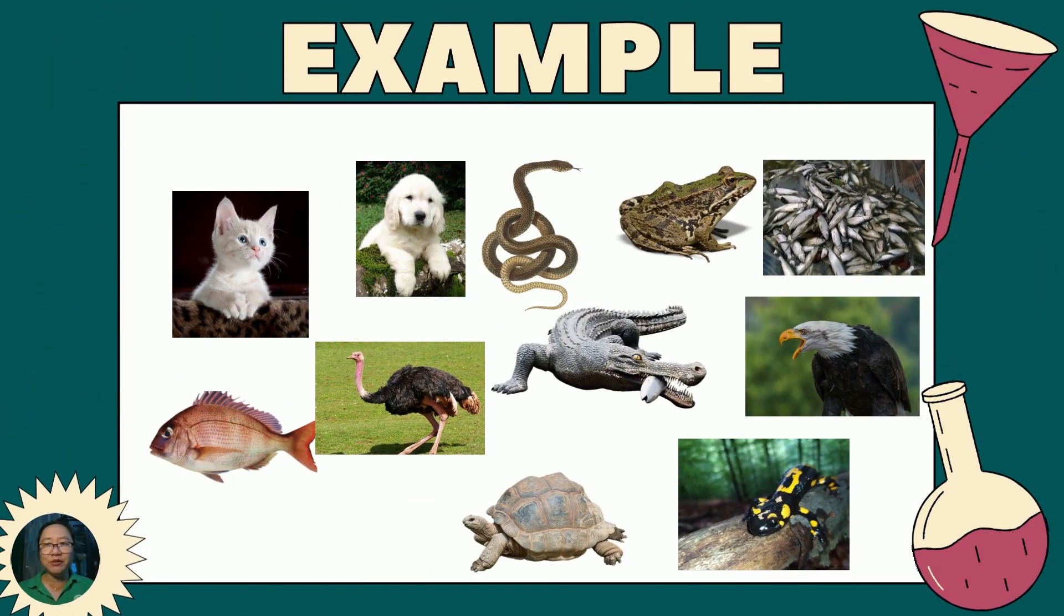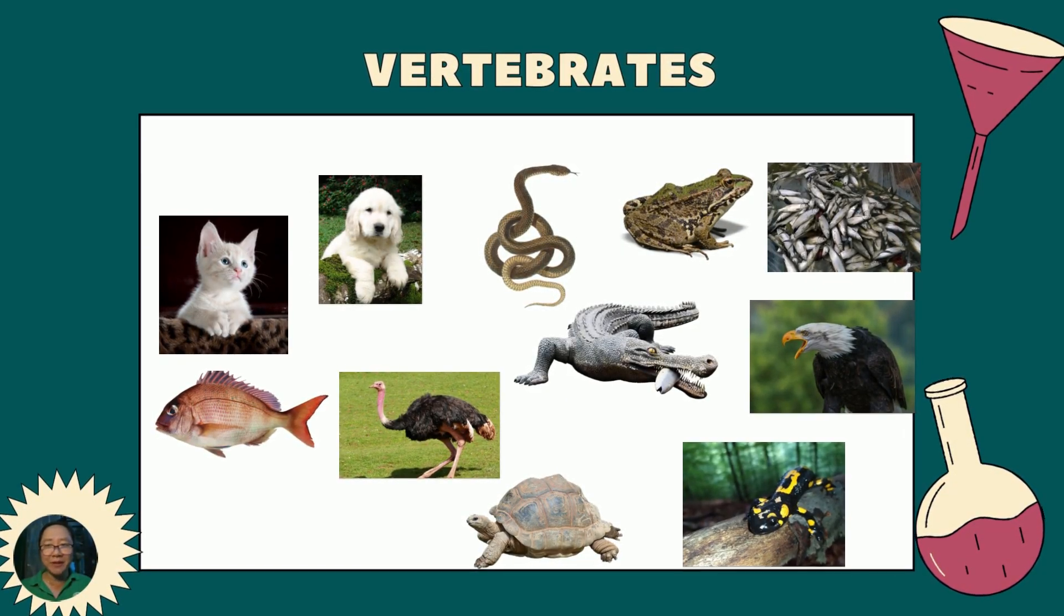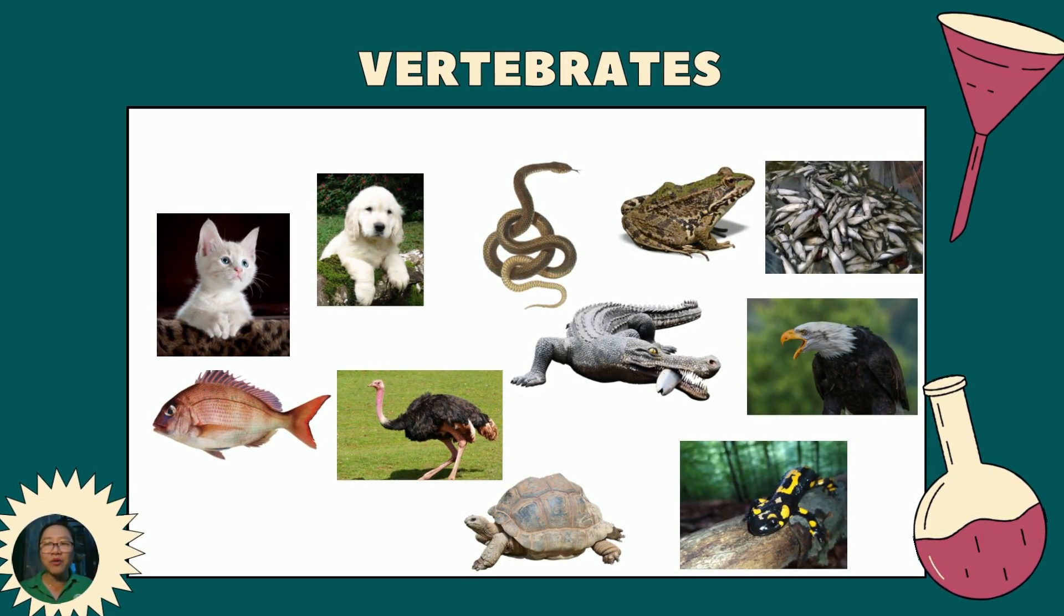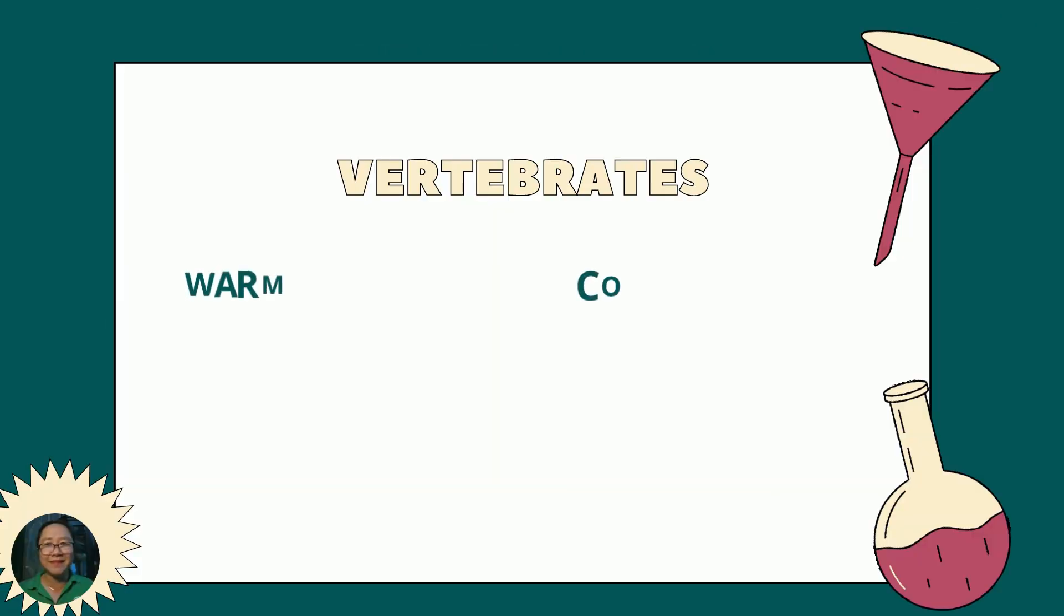What property do these animals have in common? All these animals have backbone. Hence, these animals are vertebrates. Now, how can we group these vertebrates into two groups? They can be grouped based on their capability to regulate their body's temperature in their surroundings. So we can group the vertebrates as warm-blooded or cold-blooded animals.